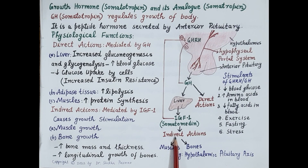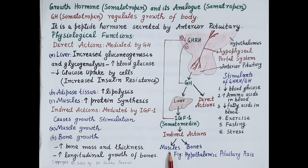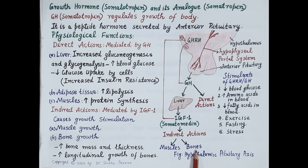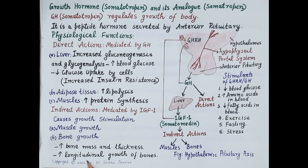The indirect effects of growth hormone are mediated by IGF-1. IGF-1 causes growth stimulation in skeletal muscles by increasing protein synthesis, which increases muscular strength. IGF-1 also induces growth of bones; it increases the production of collagen type 1 and synthesis of proteoglycan in bones, and regulates the activity of bone cells — osteoclasts and osteoblasts — thereby increasing bone mass and bone thickness. IGF-1 also enhances longitudinal growth of bones, thus increasing height during childhood and puberty.